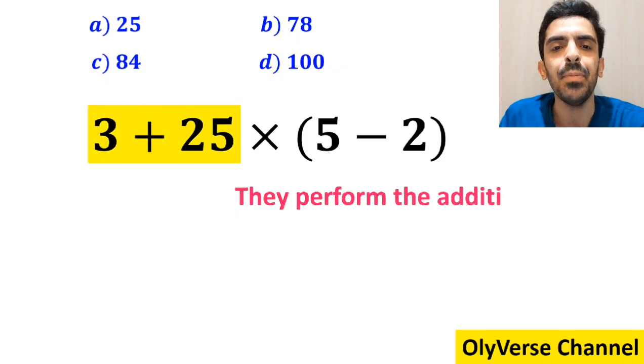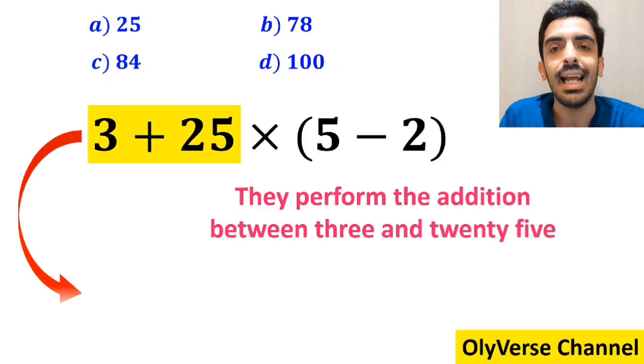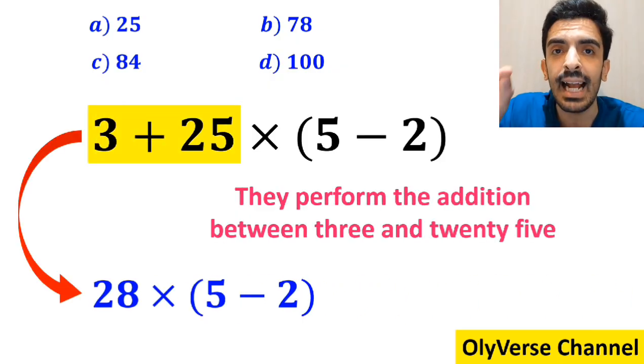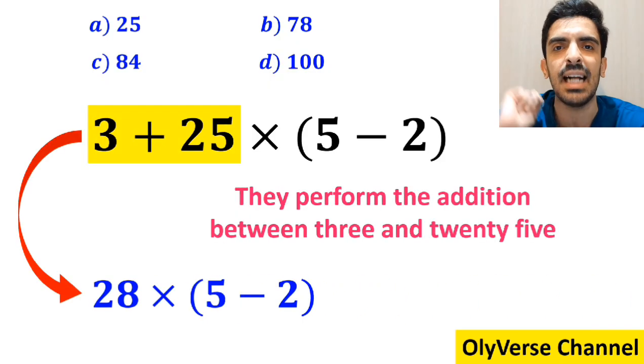Then, they perform the addition between 3 and 25, and simplify this expression to 28 × (5 - 2).